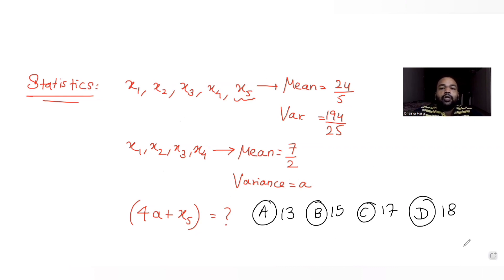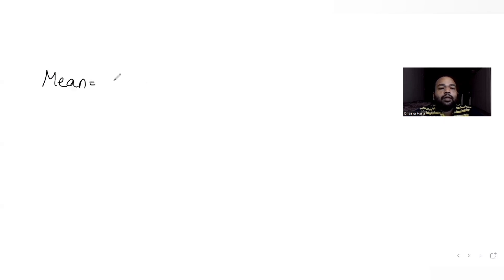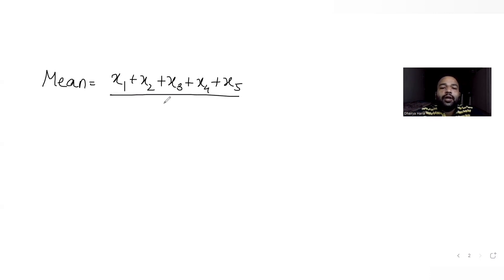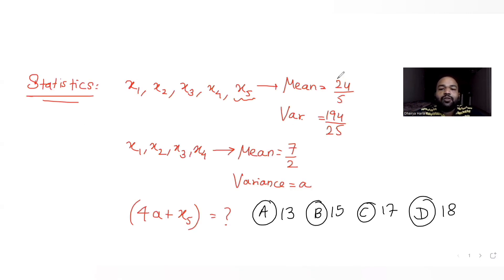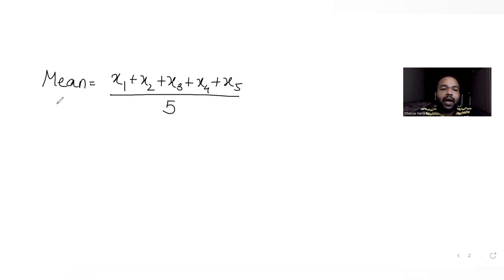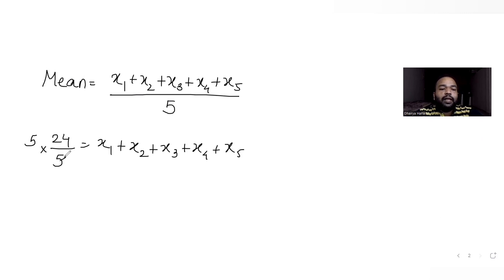Let's solve this. So the mean of the first 5 observations is the sum of the first 5 observations divided by the number of terms, which is 5. We have been given mean of the first 5 observations as 24/5. Using that, we get the sum of all 5 observations equal to 24. So that is your first equation.